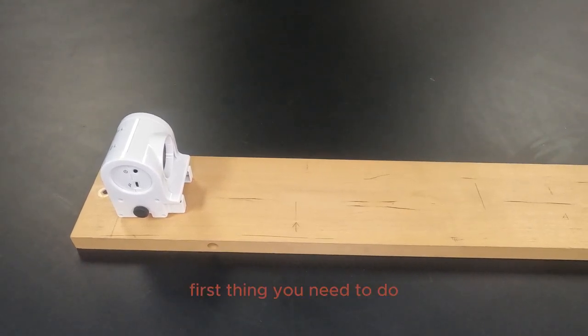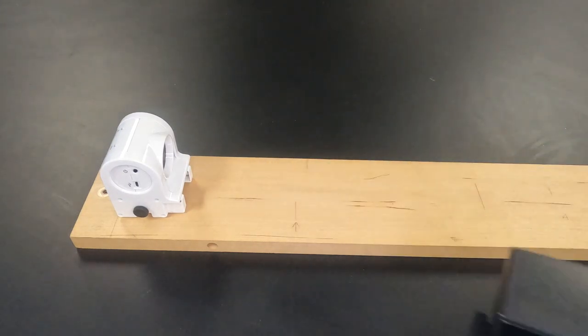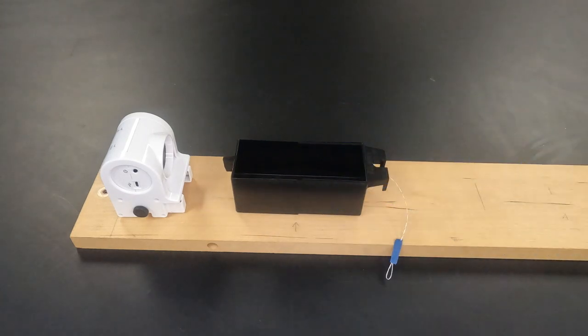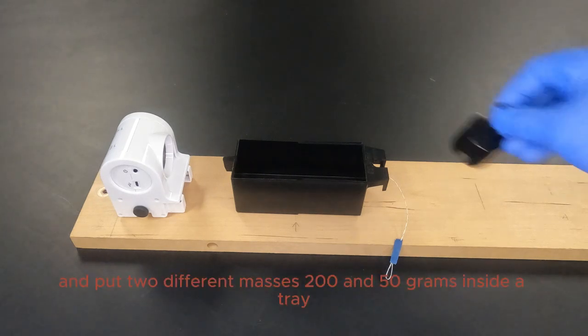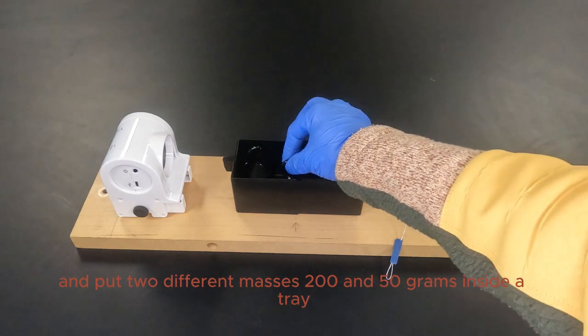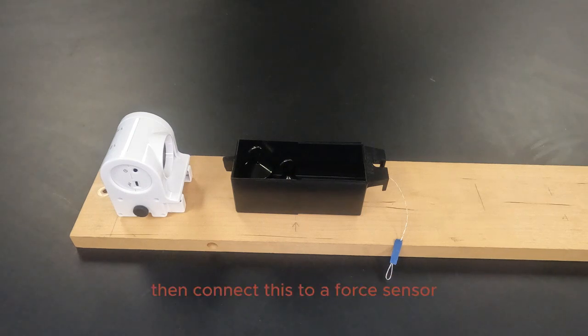The first thing you need to do is use your first tray and put two different masses, 250 grams, inside of the tray. Then connect this to a force sensor.